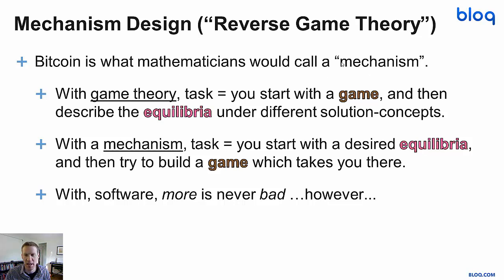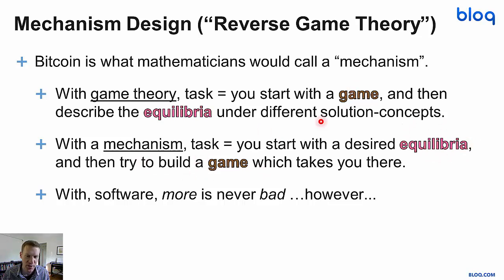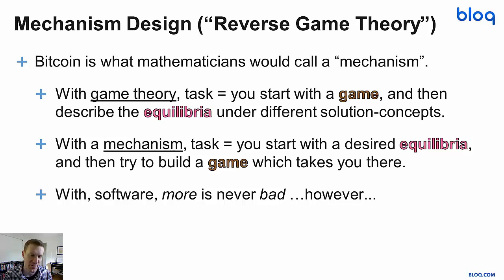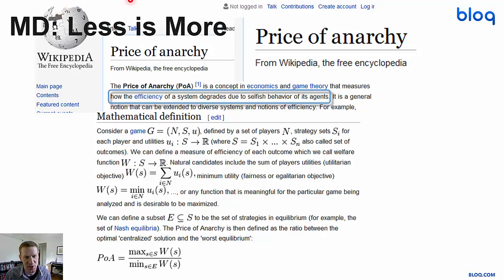Bitcoin is what mathematicians would call a mechanism. With game theory, your task is that you start with a game and then you describe the equilibria of the game under different solution concepts — you go from the game to the equilibria. With a mechanism, it's the reverse: you start with the equilibria that you want, and then you work backwards to try to build a game that, if someone solved it, would take you to that equilibria. Bitcoin's equilibria was that everyone converged to the same database state, even though the state itself would be changing as people submit transactions. The game involved mining — paying people these coins in order to incentivize them to converge to this state. So far it seems to be working. With software, more is never bad, but in the field of mechanism design, it's often the case that less is more.